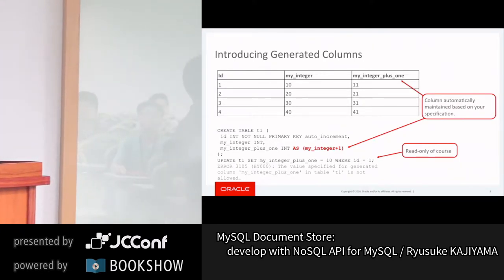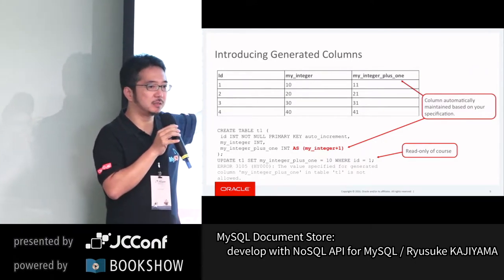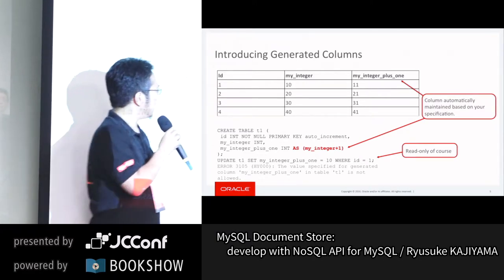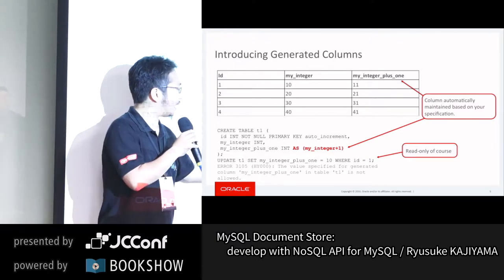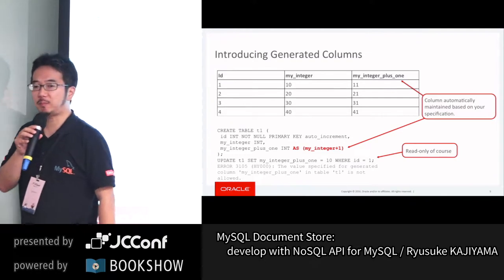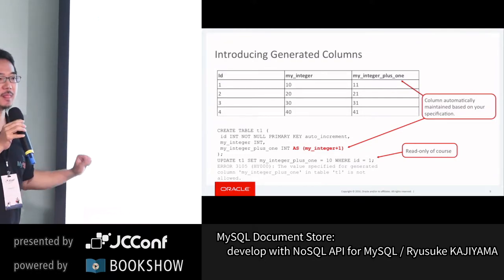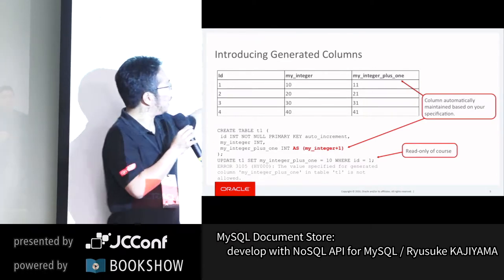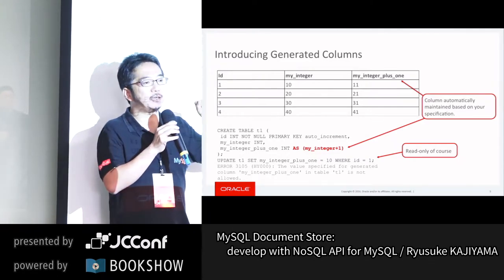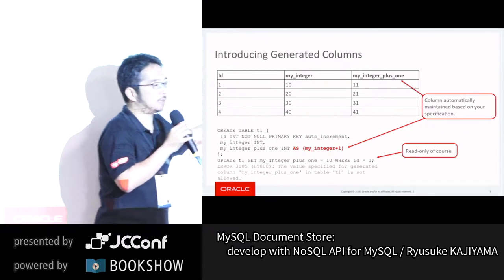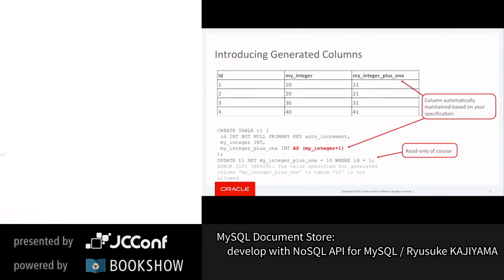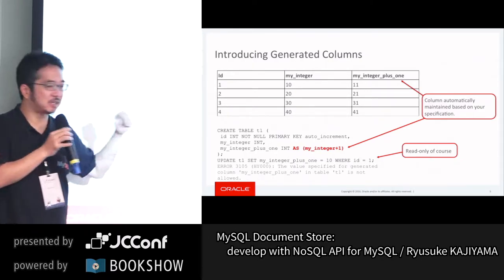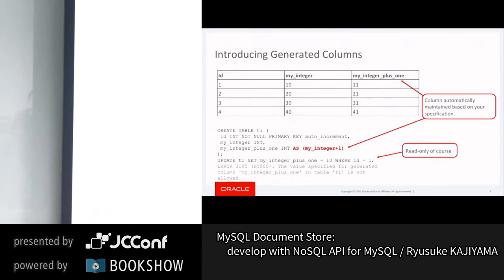For example, you may be storing numbers that always need to be calculated in some way — like always adding one in some use case. In a more realistic scenario, you might have a number of products with a quantity column and another column for price, and you always want to have the total price. You can calculate this by defining a new column as the result of a calculation — that's what we call a generated column.